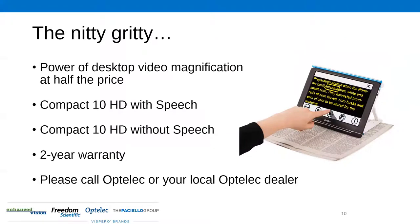You've got the power of a desktop video magnifier in this small compact device at about half the price of a desktop unit. This comes in two models: one with speech, which includes OCR allowing you to scan and have it read aloud, and one without speech, which is a magnification-only device. It comes with a two-year warranty. If you're interested in pricing or want to try one, call Optelec or your local Optelec dealer.